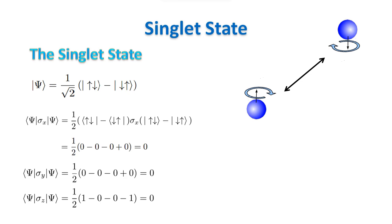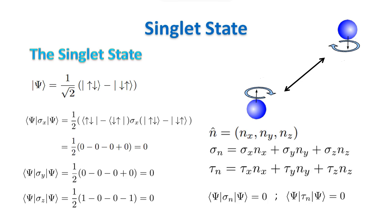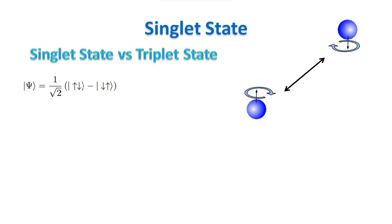This is because you cannot have the same thing with a system of non-entangled particles. Note that there is nothing special with the x, y, and z directions. Given any unit vector n, if we evaluate the operators sigma n and tau n relevant to the measurement of the spin along the n-axis, we find that the expectation values of these operators are all zero. Of course, there are infinitely many other entangled states. One of them is the triplet state.